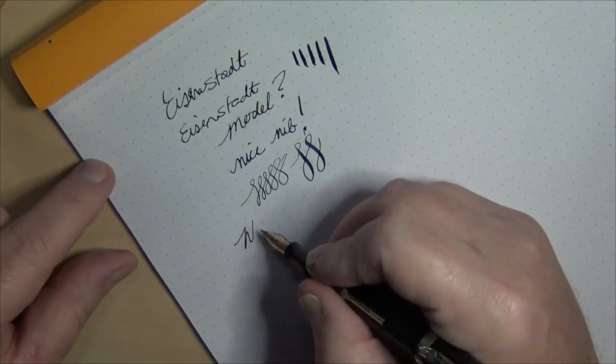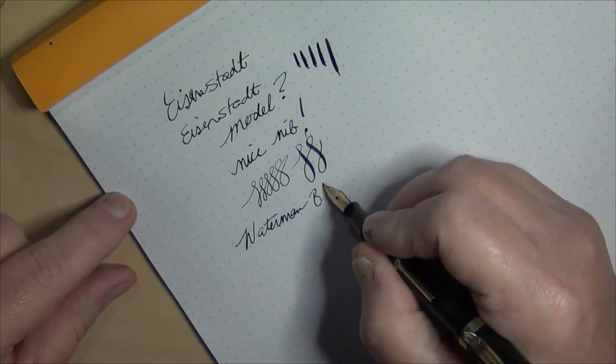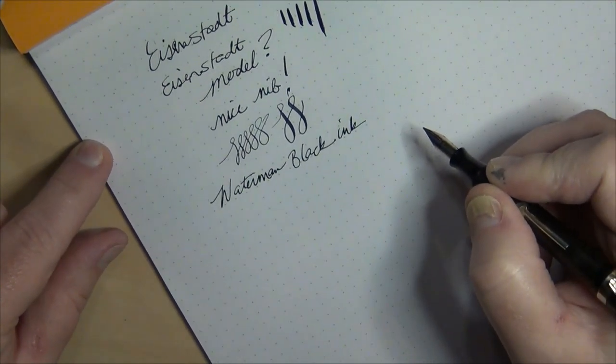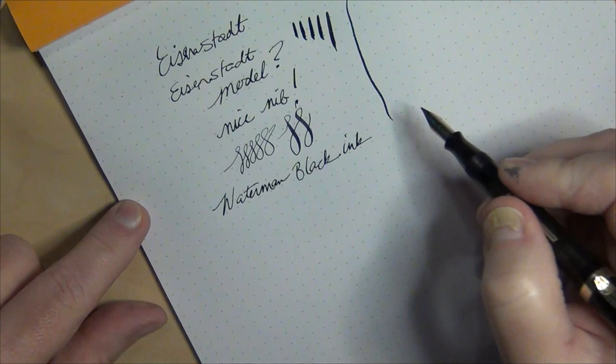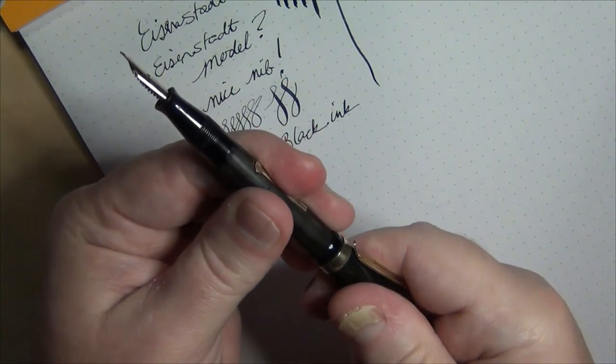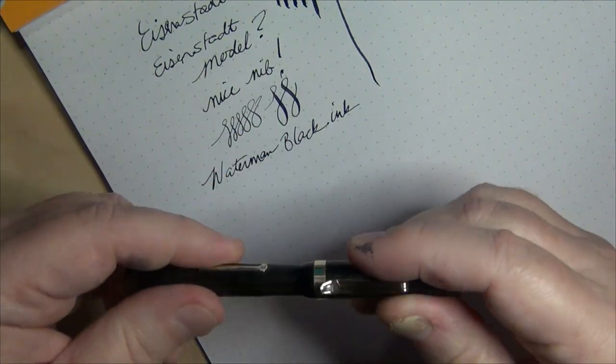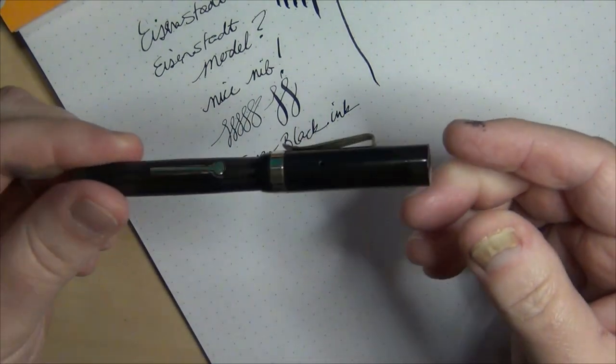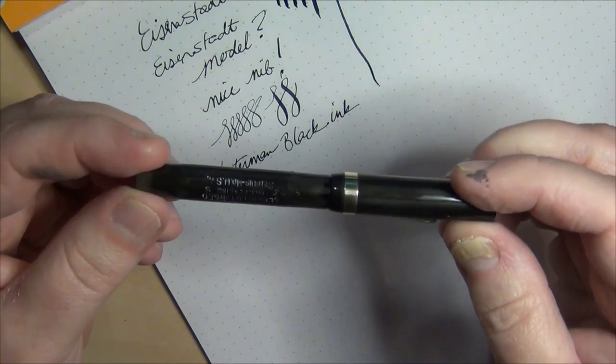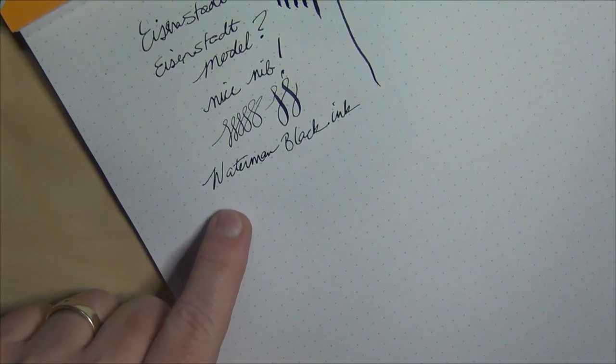I did put some Waterman black into it. Waterman is my go-to ink for most of my vintage pens, so you'll see me use various colors of Waterman. Black chased hard rubber pens I typically will throw in Waterman black because I've got several bottles of it and that is my go-to, Waterman inks. It doesn't take much to screw that little back thing back in in order for it to catch. An Eisenstadt, nice little pen, nice little nib, really happy with that.